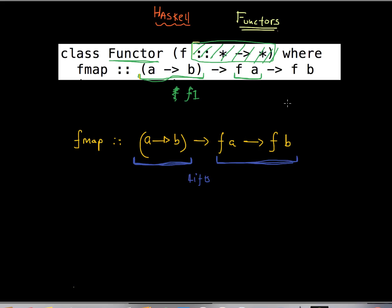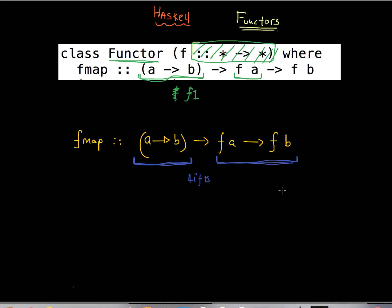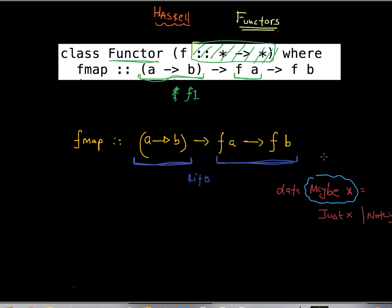You may already be familiar with the Maybe type. The Maybe type is defined as: data Maybe x = Just x | Nothing. This means my type is Maybe x — note that Maybe alone is not a type; it's a type constructor, while Just and Nothing are value constructors.